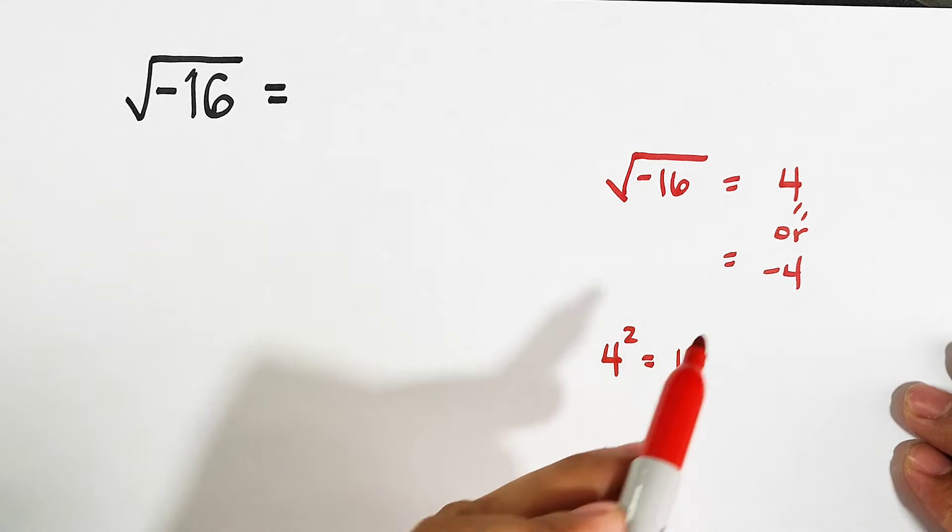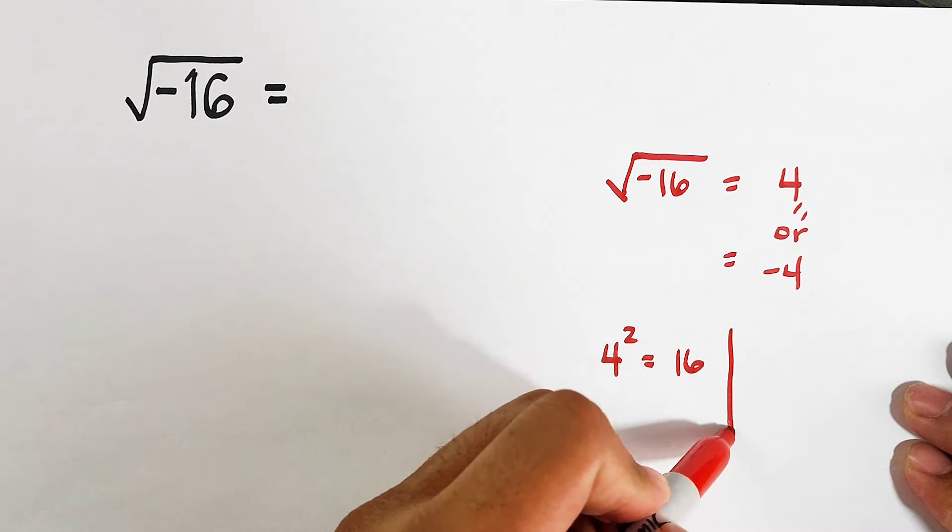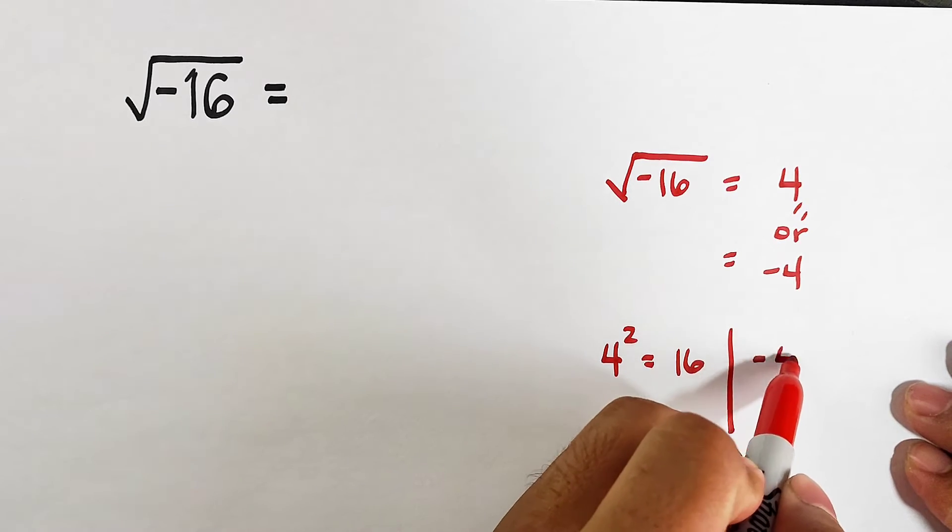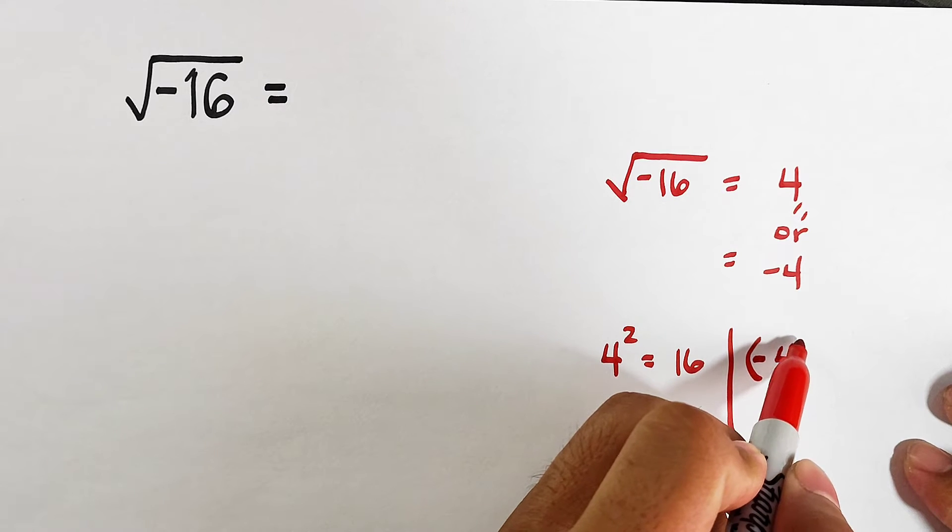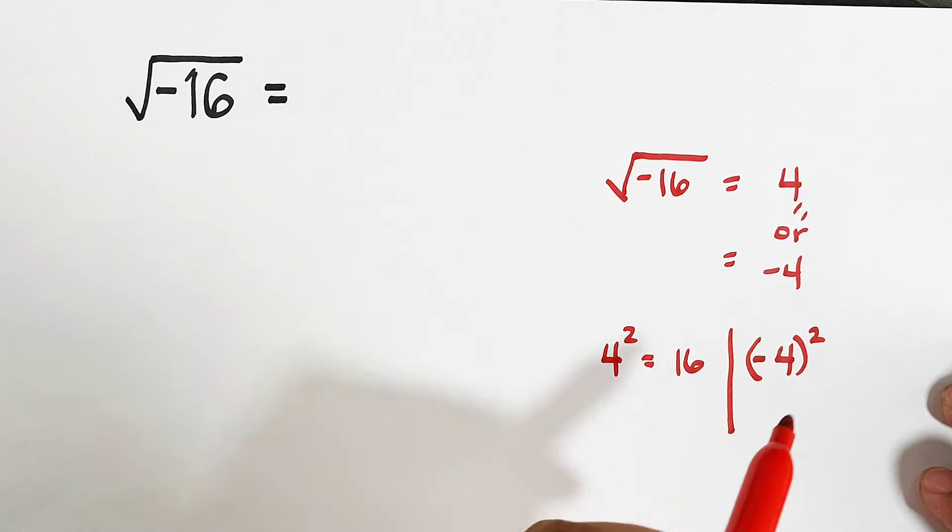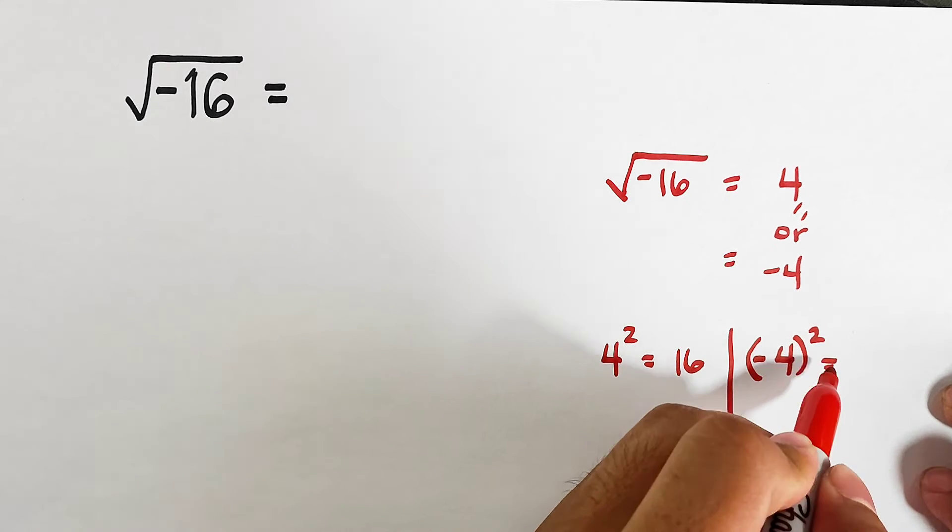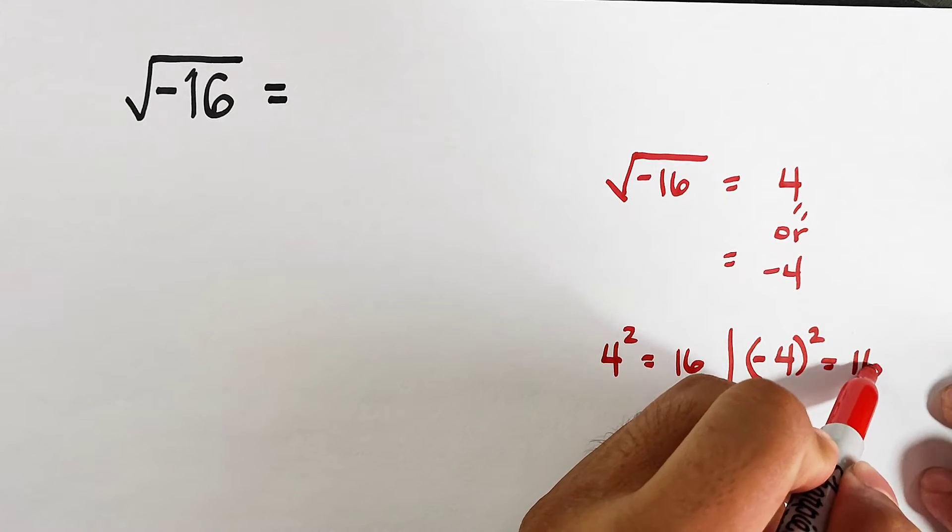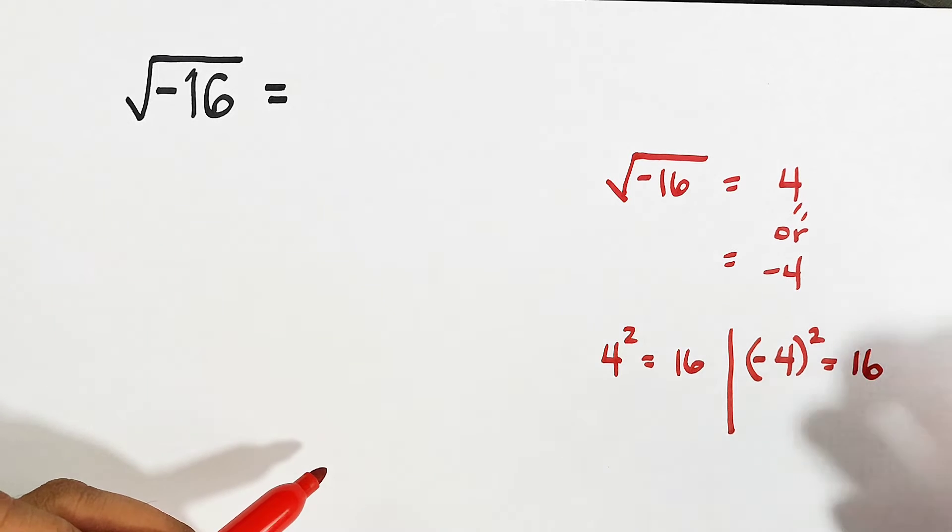So, can we try negative 4? Let's have negative 4. We have negative 4 raised to the second power. When you raise it by the square or power of 2, it will give you also positive 16. And again, the given radicand here is negative 16.